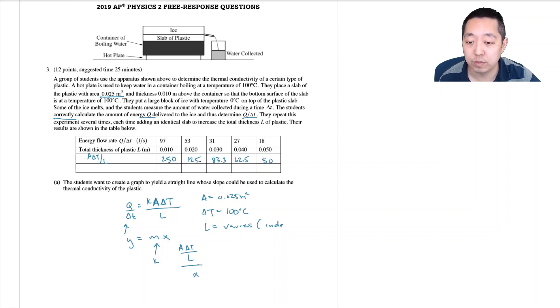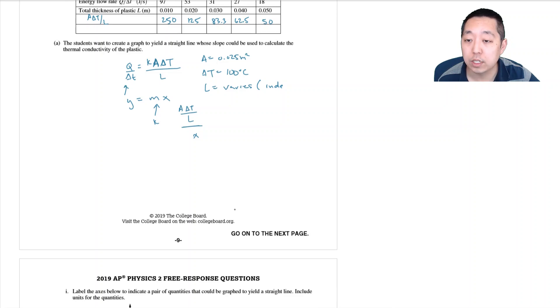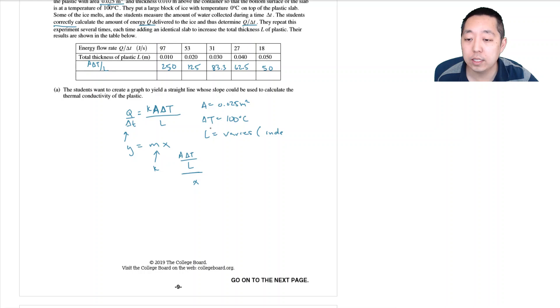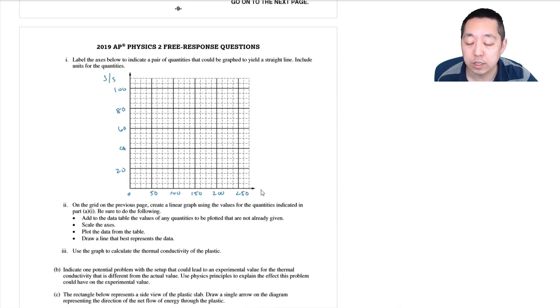Okay, so these are my numbers. These are my X values, these are my Y values. My X values are going to go from 0 to 250. I think I'm going to make this 50, so this would be 50, 100, 150, 200, and 250. My Y axis is going to go from 0 to about 100. So we'll make these 20, 40, 60, 80, 100. And then units for the quantities. A delta T over L is going to be meters squared degrees Celsius divided by meters, which is meters degrees Celsius. And here it's going to just be joules per second or watts.